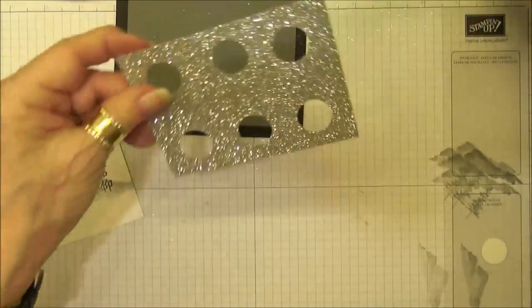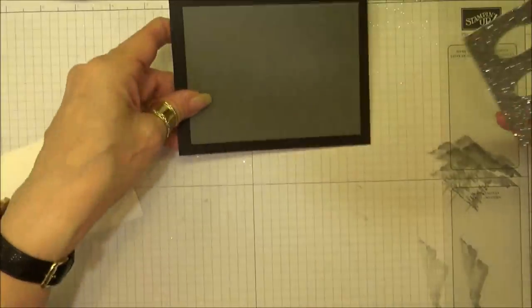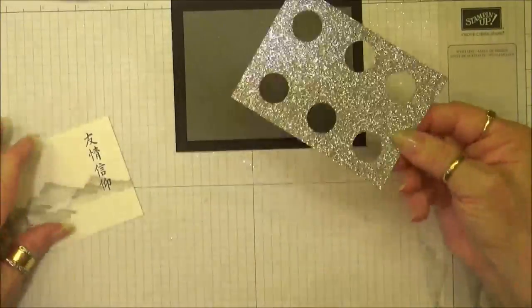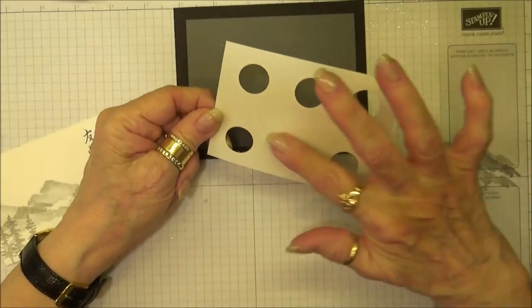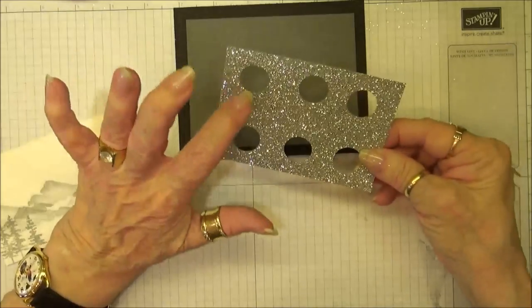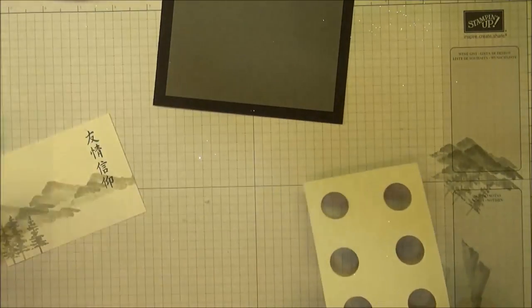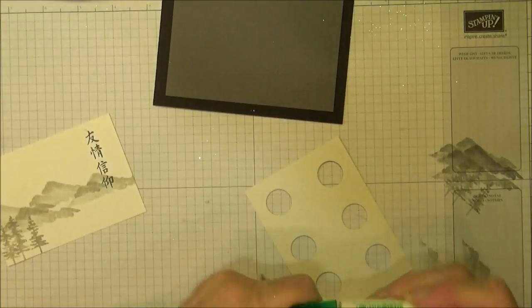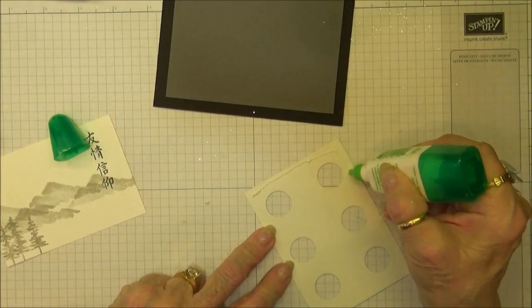Now I'm going to glue this down. It's really easy to glue this surface of this paper where it's very difficult to glue onto the top. This is the little trick that I use. I'm going to take some of my Tombow multi-adhesive and put this on the back.